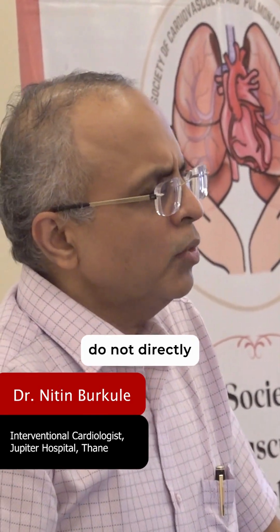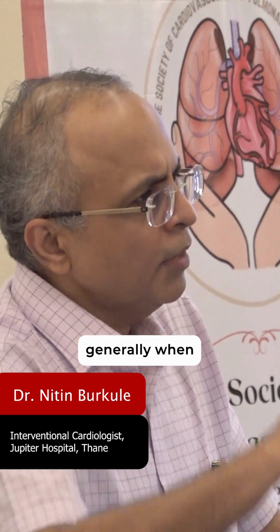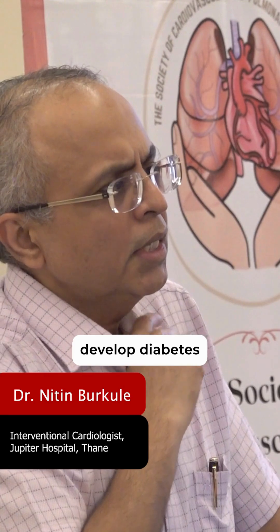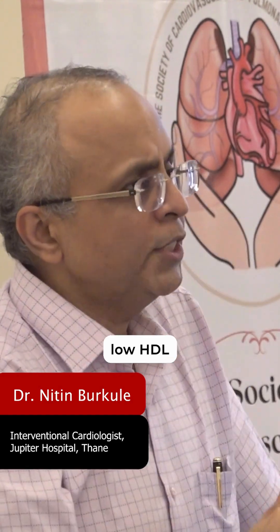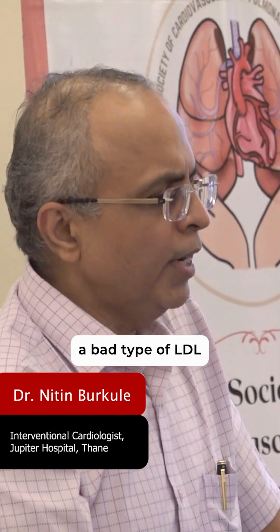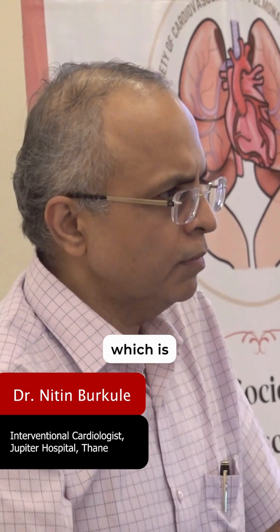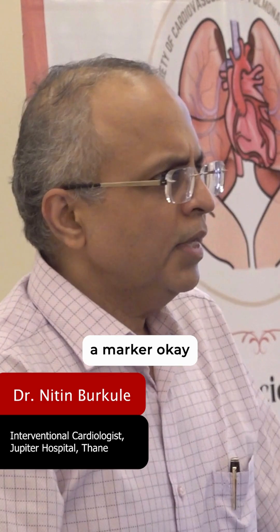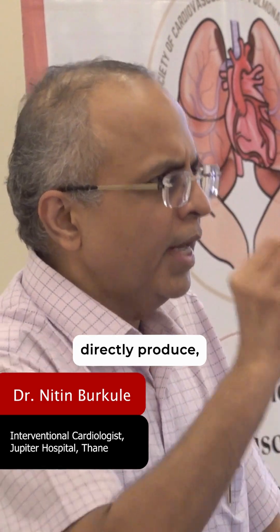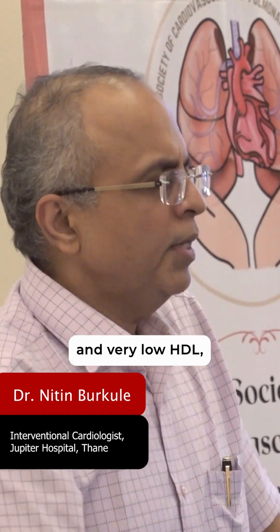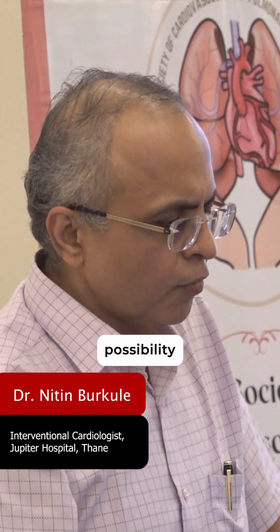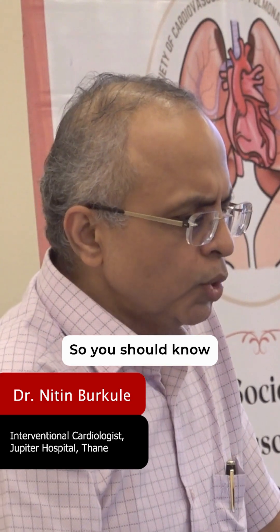Triglycerides don't directly cause problems, but when they are high, it indicates the patient probably would develop diabetes, has central obesity, will have low HDL, and a bad type of LDL cholesterol — which is much more dangerous. So high triglycerides are a marker. They are always associated with a very bad type of LDL, very low HDL, insulin resistance, and a possibility of having diabetes.